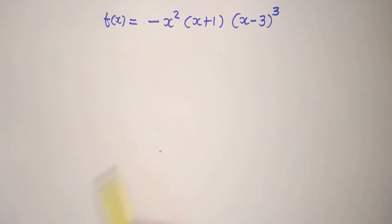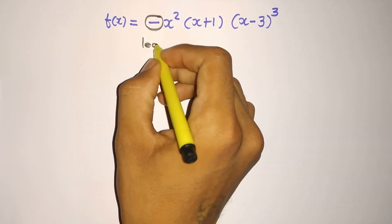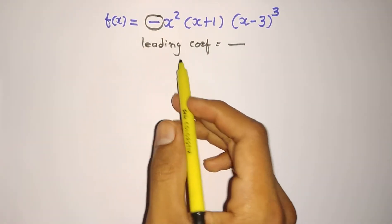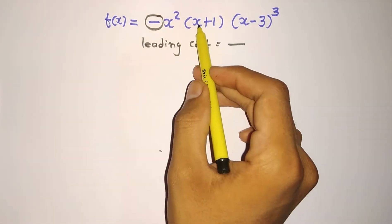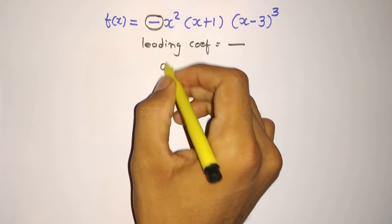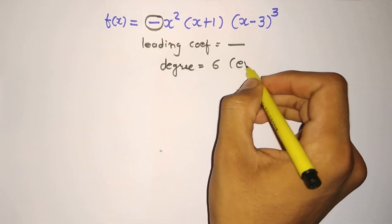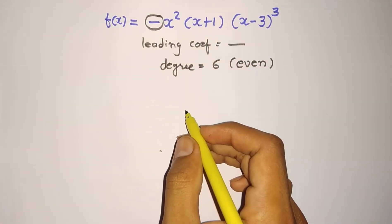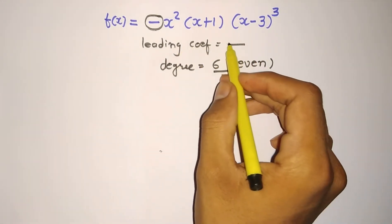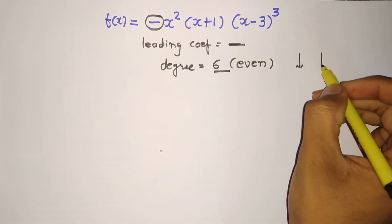Now suppose you want to draw a graph for a second polynomial. Here the leading coefficient is negative. The degree is: x squared, x, and x cubed — so multiplying gives powers 2, 1, and 3, giving a total degree of 6. Six is even. As discussed, when your leading coefficient is negative and your degree is even, then both ends will be downward.